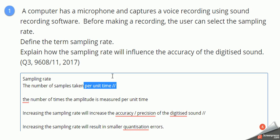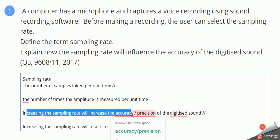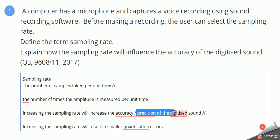Second part, explain how sampling rate will influence the accuracy. Increasing the sampling rate will increase the accuracy, because you get better precision. It's more accurate, better precision, of the digitised sound.